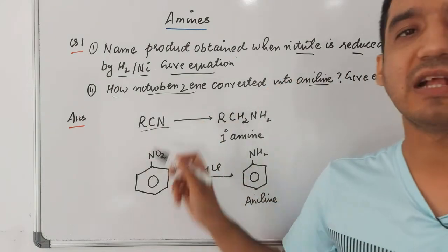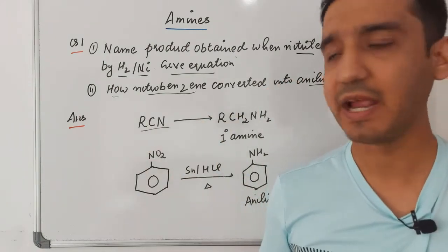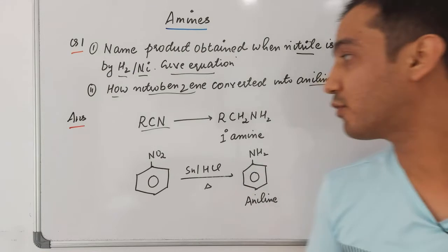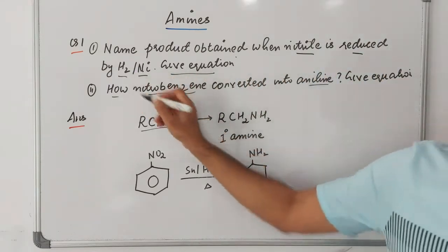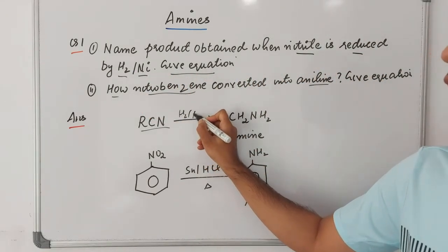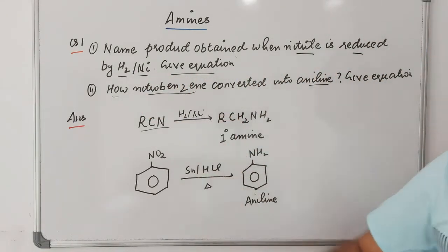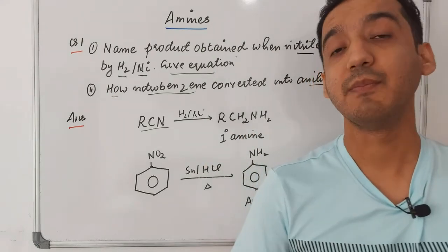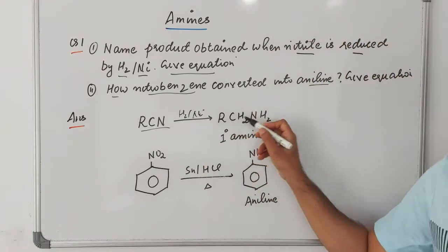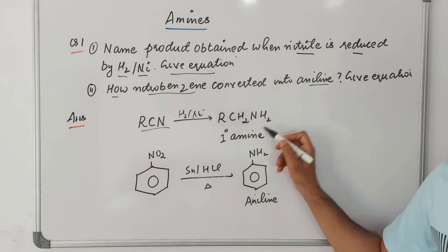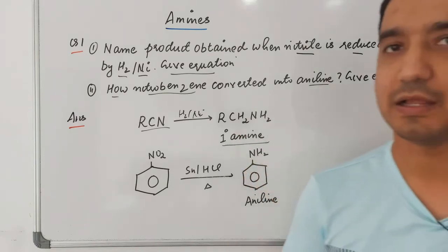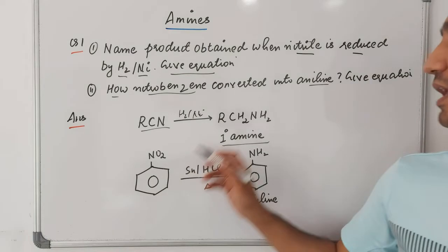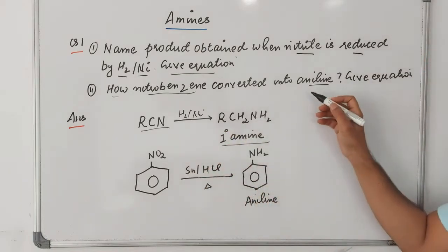For the first part, nitriles are also called alkyl cyanides (RCN). When you react a nitrile with hydrogen in the presence of nickel, reduction occurs. Because of this reduction, you get RCH₂NH₂, which is a primary amine.